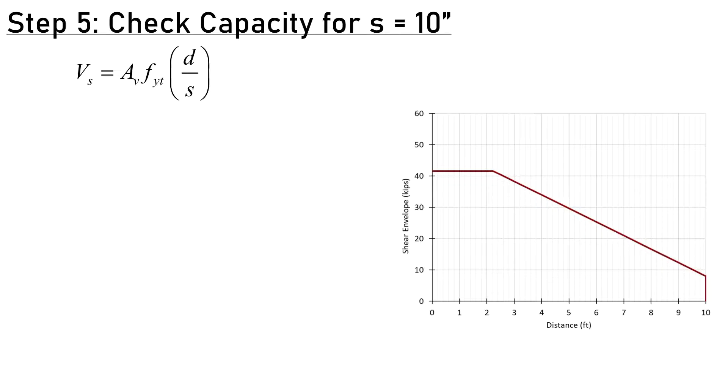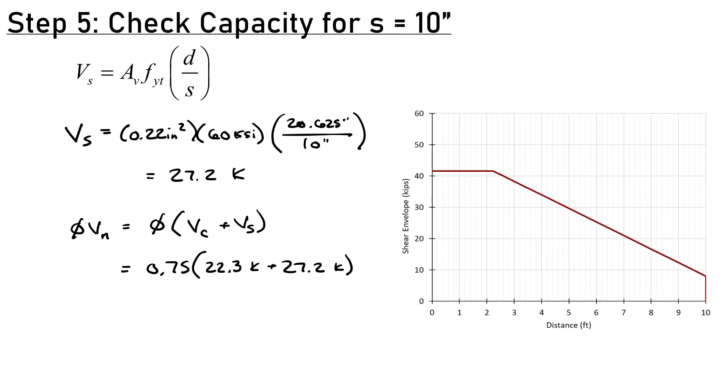We already have VC, we just need to calculate VS. This expression hasn't changed from 2014 to 2019. Area of steel is 0.22 square inches, 60 KSI steel, distance D is 20.625 inches divided by my chosen spacing of 10 inches, giving 27.2 kips. Adding that together for total shear capacity: phi times VC plus VS equals 0.75 times 22.3 plus 27.2, which is 37.2 kips.